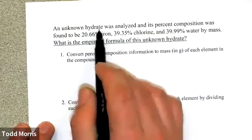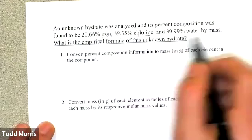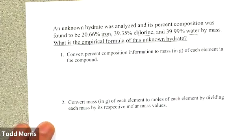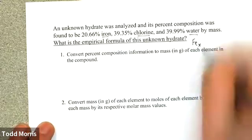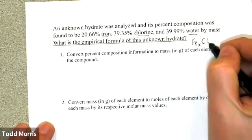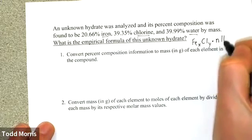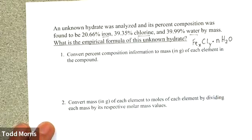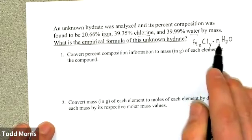Because it's a hydrate containing iron, chlorine, and water, we know generically that its empirical formula will be iron to some value X, Cl for chlorine to some value Y, and dot some value N number of water molecules. So our goal here, in three possibly four steps, is to determine what the values are of X, Y, and N.